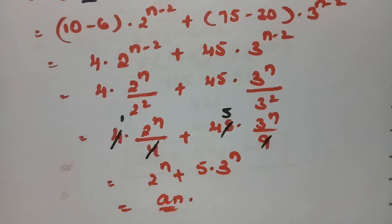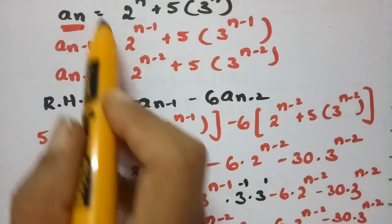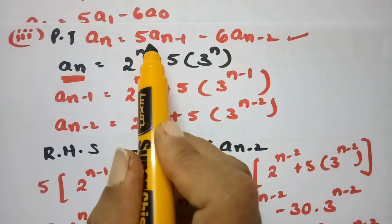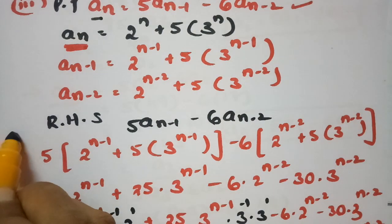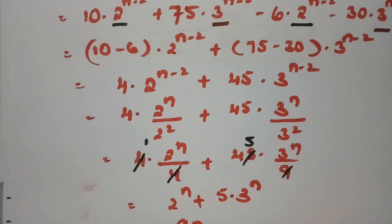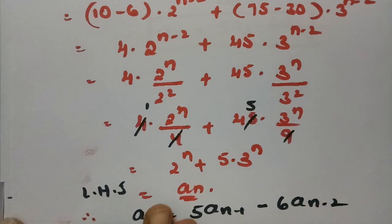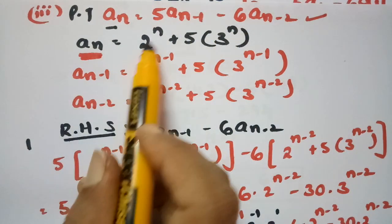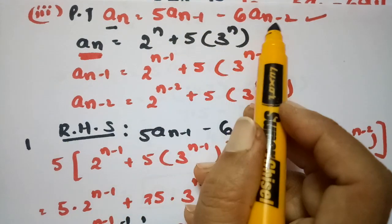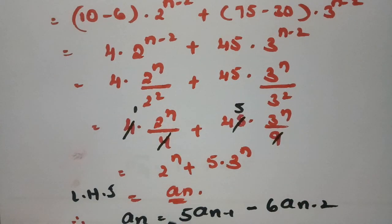Therefore, starting from the RHS we obtained the LHS value a_n. So we have proven that a_n equals 5a_{n-1} minus 6a_{n-2}, given that a_n equals 2^n plus 5 times 3^n. This completes the proof that the given formula is a solution of the recurrence relation.